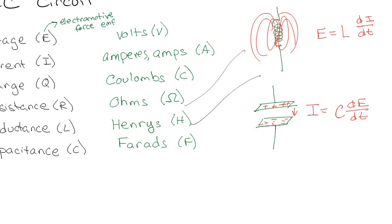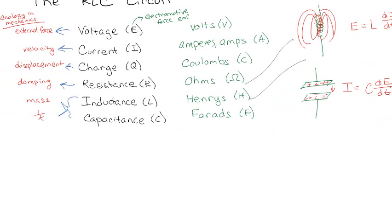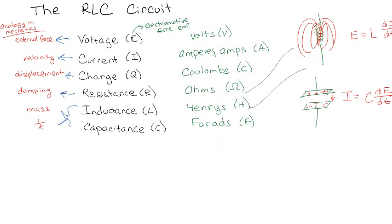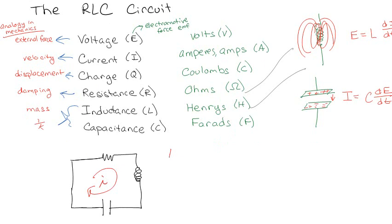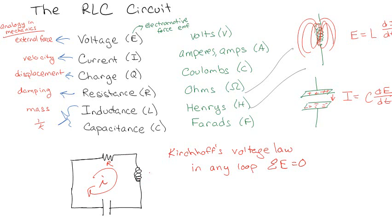So let's say we have a circuit with a resistor, an inductor, and a capacitor. There's a technique called mesh analysis, based on Kirchhoff's voltage law, which says that as you go through any loop in a circuit, the sum of the voltages must equal zero. So with resistor R, inductor L, and capacitor C, I can relate the current to each one of those elements.